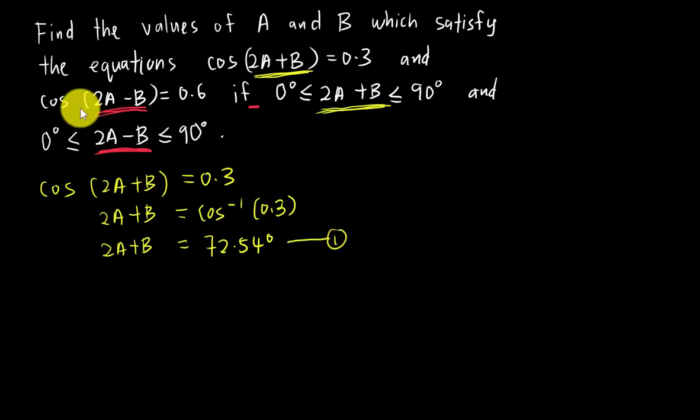I have another equation: cos(2A-B) = 0.6. I'll do the same thing, moving cos to the other side to get 2A-B = cos⁻¹(0.6). I'll just type into the calculator and get 53.13° as my second equation.